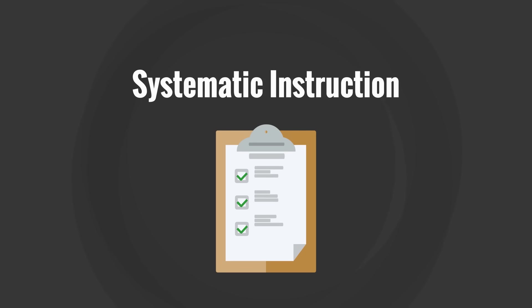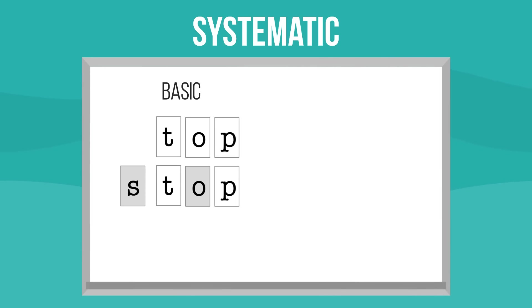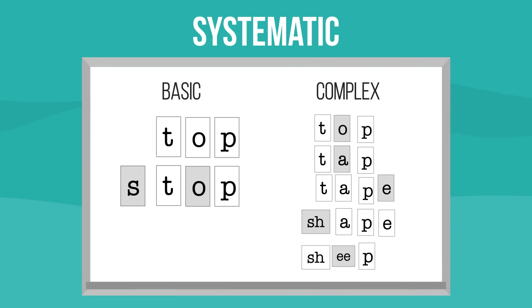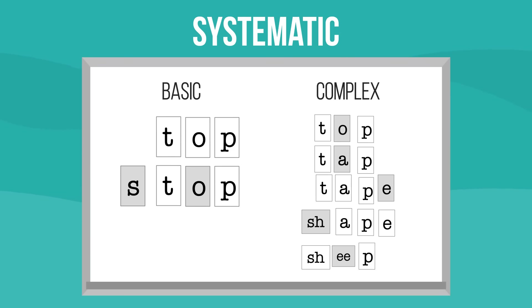This brings us to the next feature of a structured literacy approach: instruction is systematic. With systematic instruction, skills are sequenced logically. As students build confidence and fluency with basic phonics concepts, more complex phonics patterns are introduced, such as consonant and vowel digraphs — two letters that make one sound — and spelling patterns like magic E.